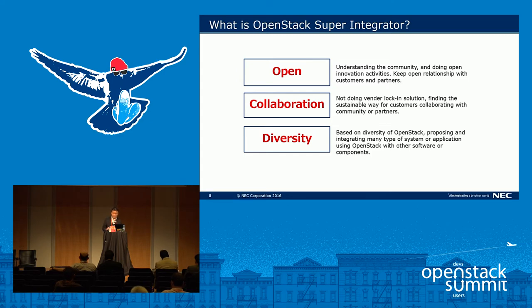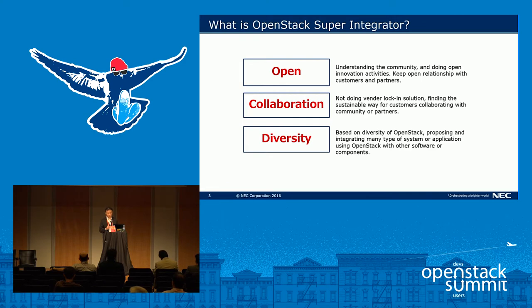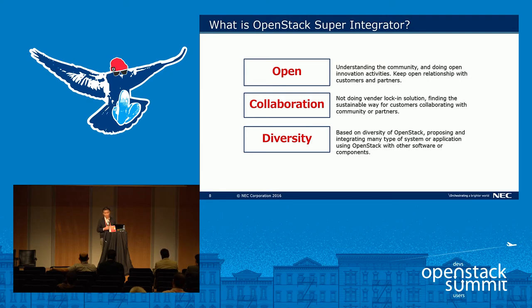Diversity is required to provide upstream solutions to customers, because in the cloud environment, existing customer segmentation is becoming flat. For example, telecom NFV and enterprise systems have historically used completely different solutions and technologies over many years. But in recent years, NFV is becoming a big wave and they are using the same technologies. To become a super integrator, we have to know a wide range of technologies, applications, and solutions and provide an optimized way to apply them for customers.